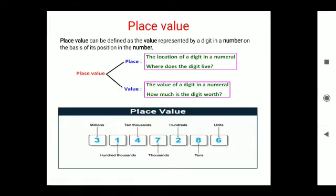Place value can be defined as a value represented by a digit in a number on the basis of its position in the number. There are two terms: place—where does the digit live? And value—how much is the digit worth?